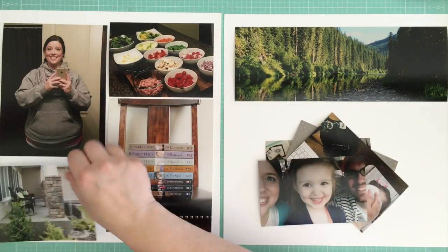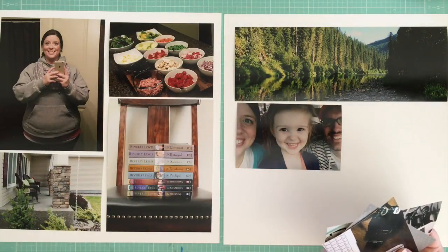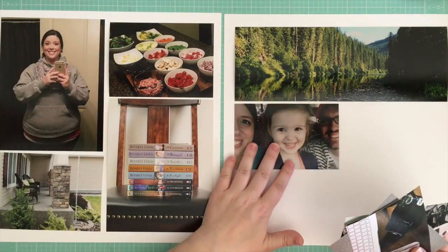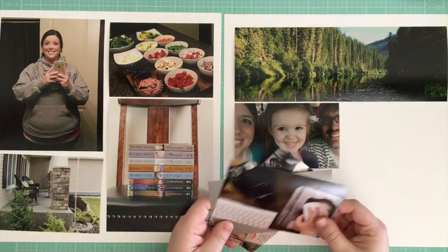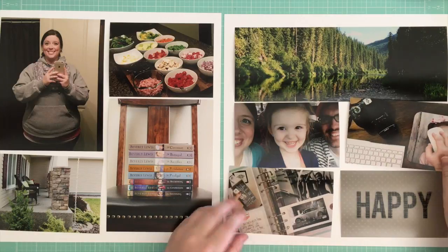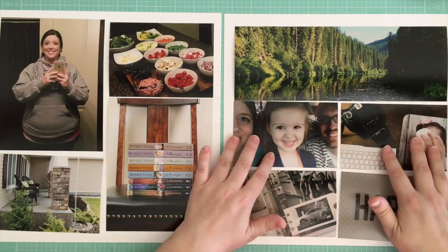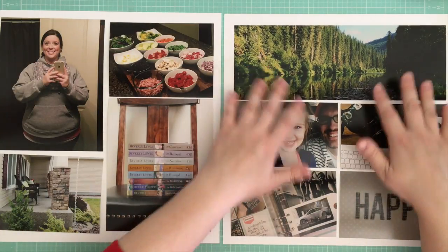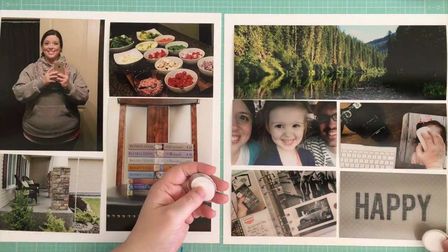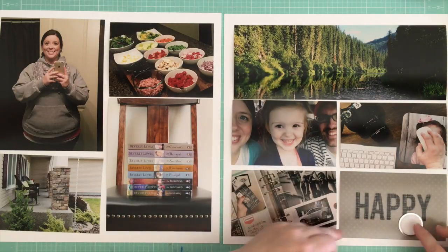I did have a method to why I put certain photos in certain areas. For instance, I have that photo of me on the left-hand side, and there was only one other photo that really included faces, so I made sure to put that on the right-hand side. Then I have this photo of nature on the top right, and there was only one other photo that included green plants, so I put that on the left-hand side. I tried to keep it all pretty balanced.